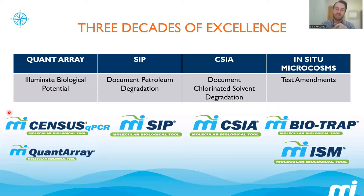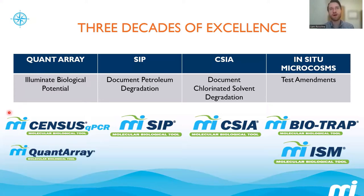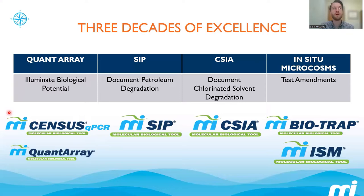So instead, what we offer are something called QuantArrays — arrays of qPCR targets that we can look for simultaneously. Instead of sampling groundwater and then selecting individual qPCR targets, you can sample that groundwater and send it to us to look for a specific suite of targets related to, for example, chlorinated solvent degradation or petroleum hydrocarbon degradation. I'll be talking about several different QuantArray platforms within this webinar.